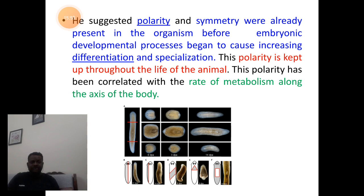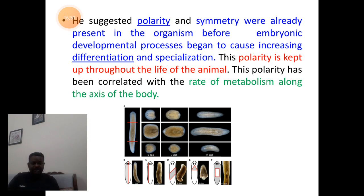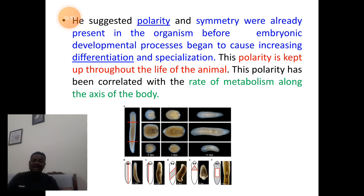Child also suggested that both the polarity and the symmetry were already present and decided during the embryonic development process itself — that is, during the process of differentiation and specialization. The polarity and symmetry of the body is fixed and retained, remaining unchanged throughout the lifetime of planaria. He also correlated the concept of polarity gradient with the rate of metabolism all along the anteroposterior axis.